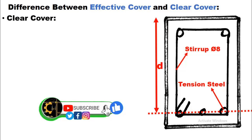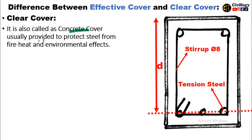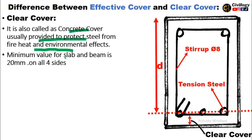Now let's understand what is clear cover. Clear cover is also called concrete cover and it is usually provided to protect the steel from heat and environmental effects like corrosion and rust. As you can see here, this is the clear cover. The minimum value of clear cover for slab and beam is 20 mm, and it is provided on all four sides with the same value.